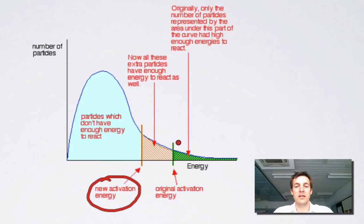What we can say here by looking at the graph is that because the area under the curve has increased here, or the area under the curve to the right of the necessary energy has increased, that means there's a greater proportion of particles with enough energy to react.